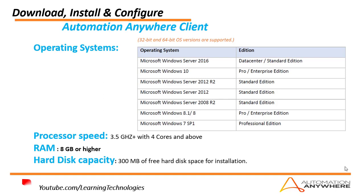If you want to install the Automation Anywhere Client on your system, the processor speed required is 3.5 GHz or higher with four cores and above. RAM required is 8 GB or higher, and the hard disk capacity needed is more than 300 MB of free hard disk space.